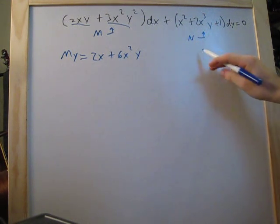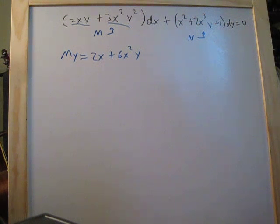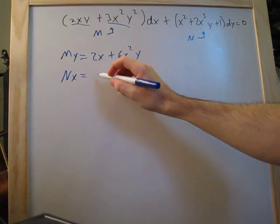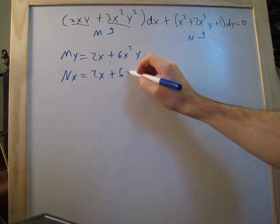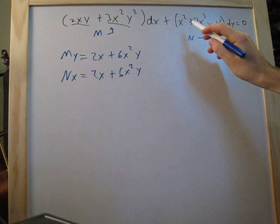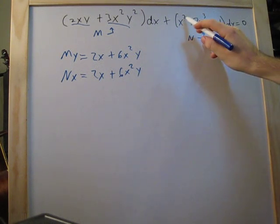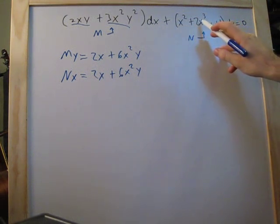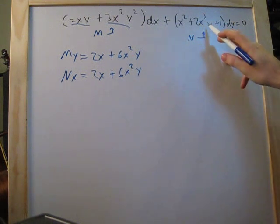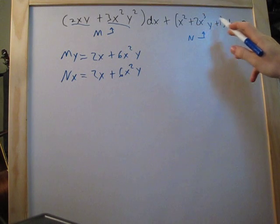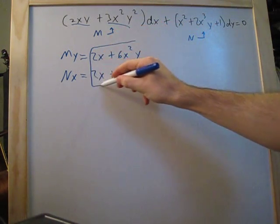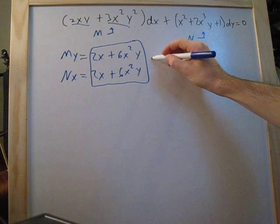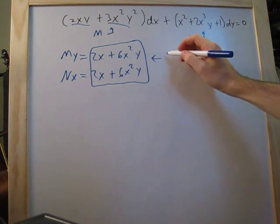Then we do the same thing on the right side — we differentiate N with respect to x. So N_x is going to be 2x plus 6x²y. The x² drops down to 2x, the 2x³ drops down to 6x² times y, and the constant 1 drops out. We notice both equations are exactly the same.